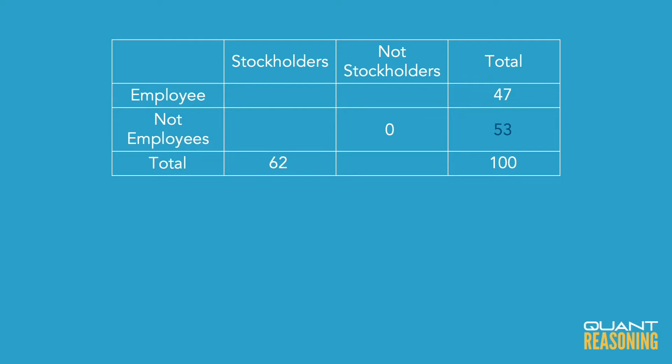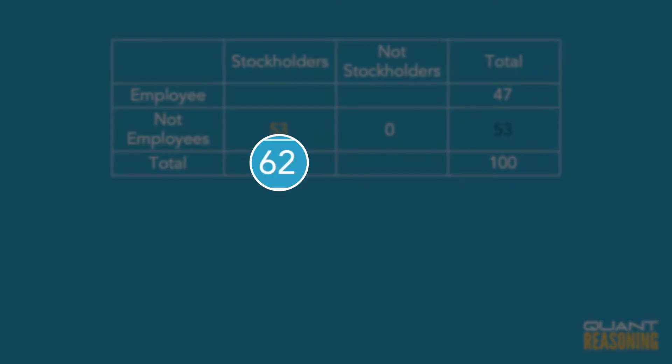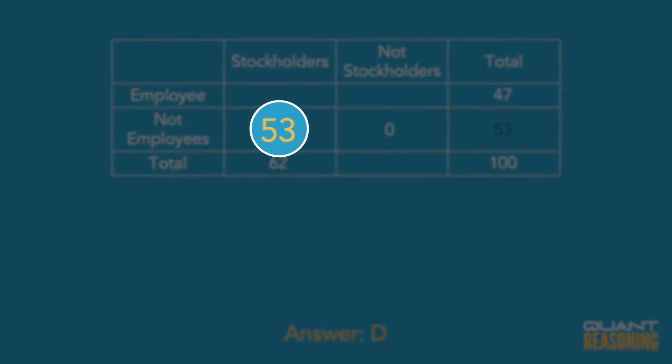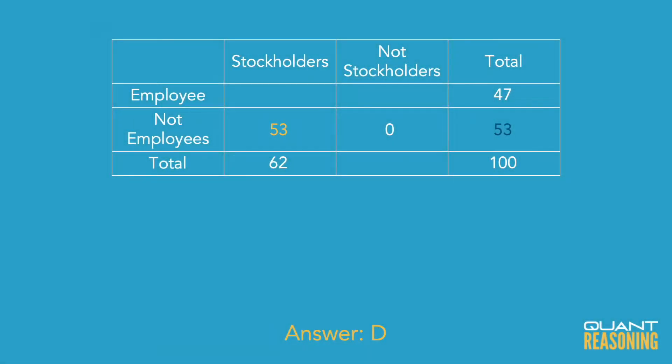Notice that in this case, I didn't actually need the 62. In other words, they gave us a fact that was unnecessary, and that's uncommon. It's really quite rare that in problem-solving the GMAT will give us a fact that we don't need, but it does happen, and this is a good example of that. So we're going to go with 53 and move on to the next question.